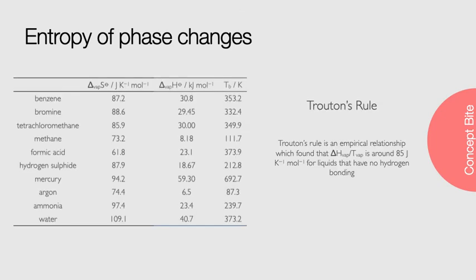Frederick Trouton looked at a large amount of data, looking at the relationship between the molar enthalpy of vaporization and the boiling point. He found that the entropy change for vaporization is around 10.5 R, or about 85 to 88 joules per Kelvin per mole. This value comes about from using the Boltzmann definition of entropy, and the changes to energy levels as the molar volume changes.